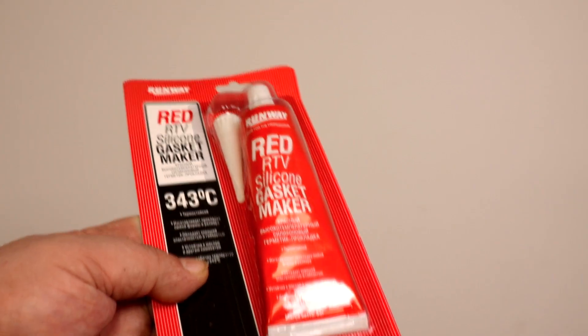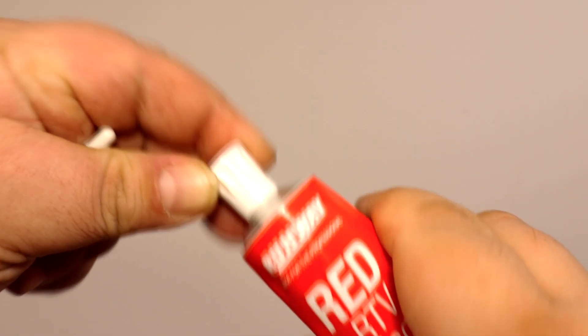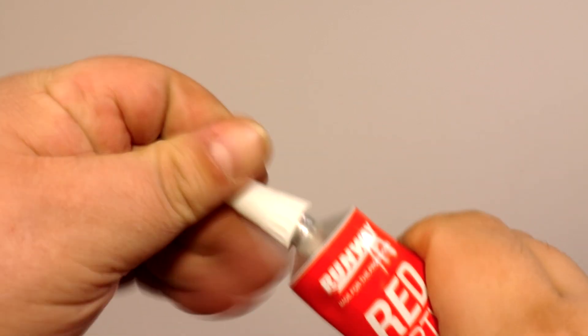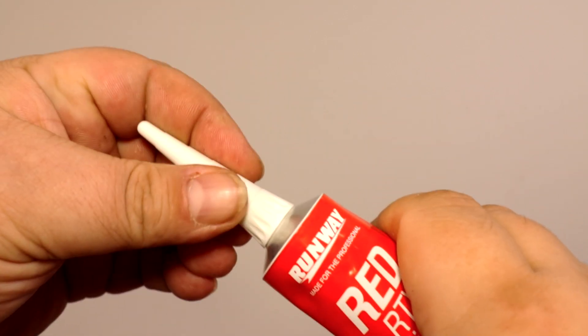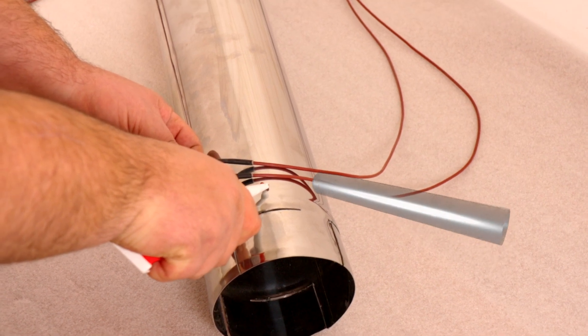I use this cool red heat sealant to hold the wire in place. It can withstand temperatures up to 343 degrees Celsius. It dries pretty fast, which I like. And the dispenser that comes with it will help me use as little as possible.